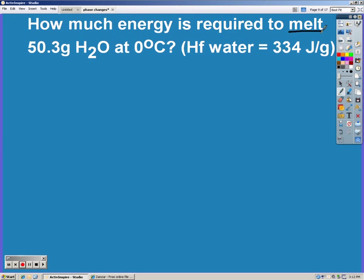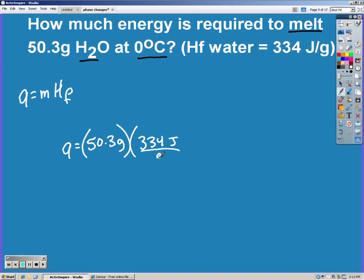So it says how much energy is required to melt 50.3 grams of water at zero degrees. Since we're just melting it, we're going to use our q = m·Hf. We're looking for q, we know mass, and we know the Hf was 334 joules per gram. Grams cancel, leaving us with joules, and so we have 16,800 joules.